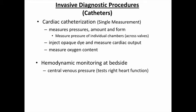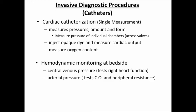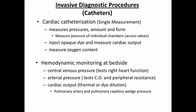Hemodynamic blood monitoring is similar but done over a longer period of time at the bedside. We can measure central venous pressure, which gives us an idea of what's going on with the right side of the heart, as well as arterial pressure, which provides ideas about cardiac output and peripheral resistance. We can also directly measure cardiac output, and on the right side, pulmonary artery and pulmonary capillary wedge pressure.